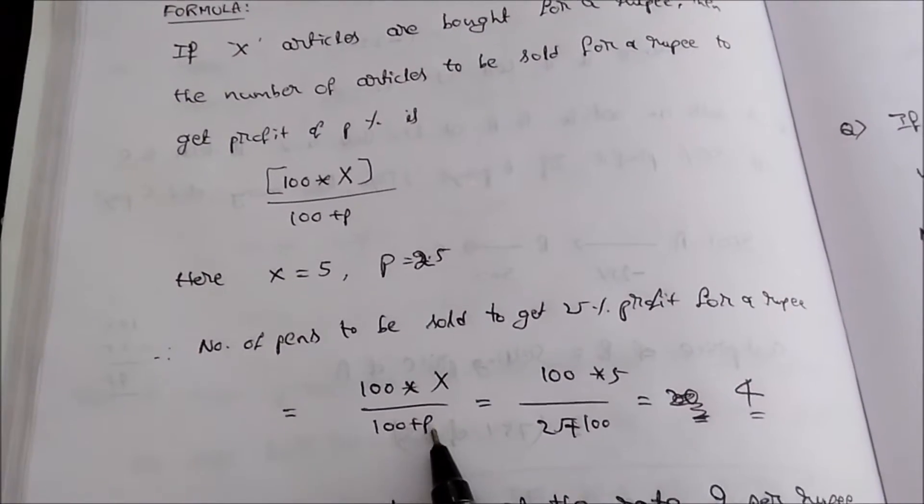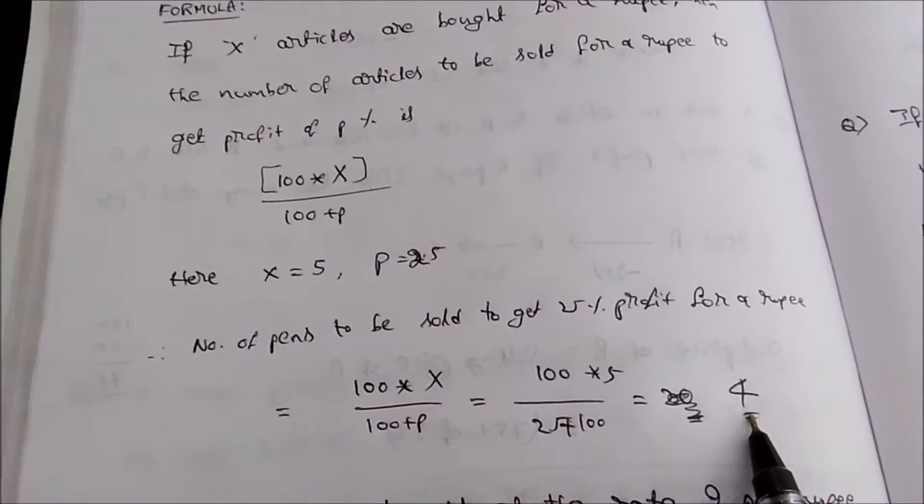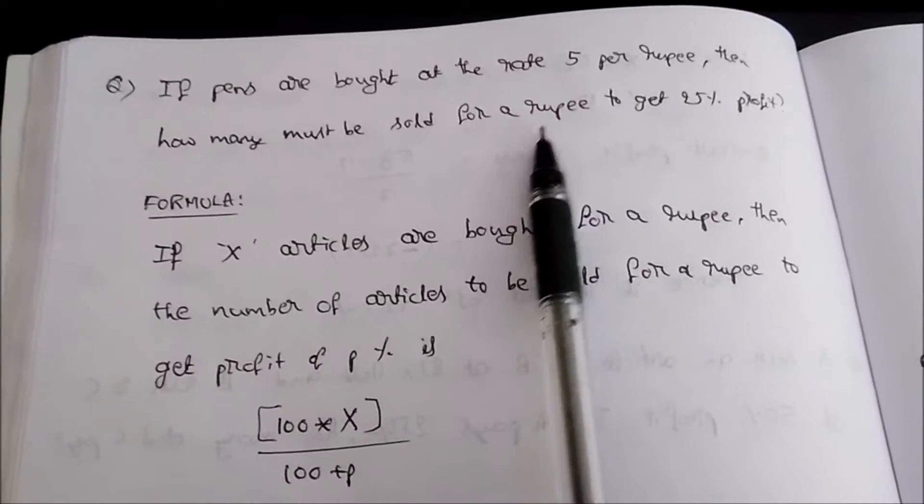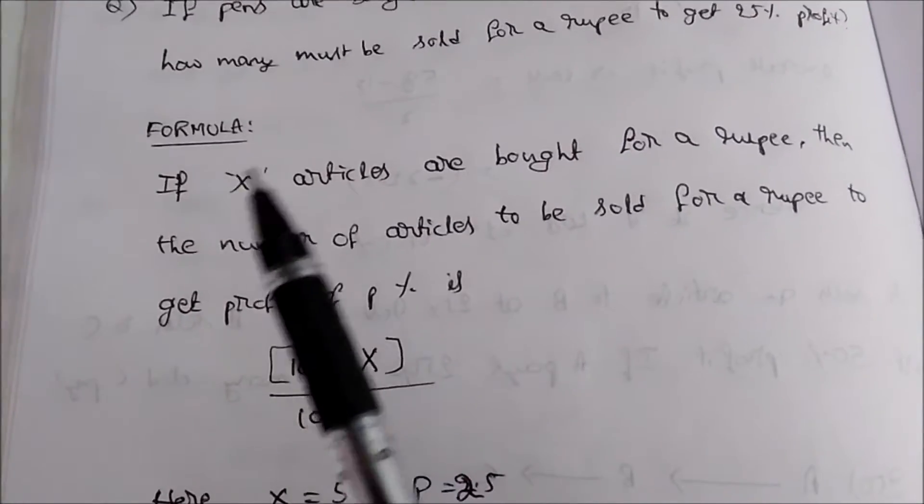When you solve this one you will get the value 4. So you need to sell 4 pens per rupee to get a profit of 25%. So do remember the formula.